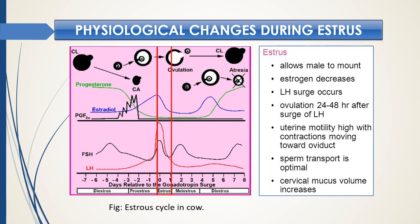Estrus is the most important phase of the estrus cycle — this is the phase when females allow male mating. This is also the phase where LH — the luteinizing hormone of the pituitary — peaks, which is called the surge of LH, and ovulation occurs in most mammals. This picture is from cow.